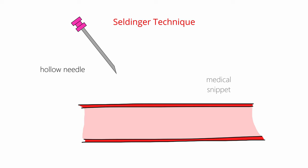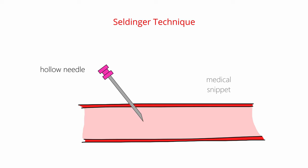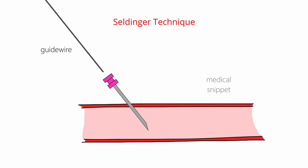First, a hollow needle is slowly inserted into the blood vessel of interest. When there is a splash of blood, the needle is held at this position. Then the guide wire is introduced into the vessel through the hollow needle. Once the guide wire is placed, the needle is removed.